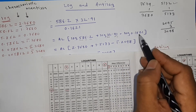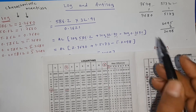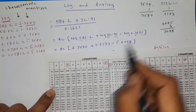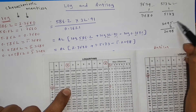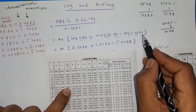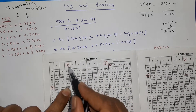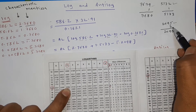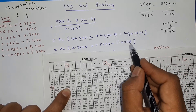For log of 0.1621, we see the log in the same manner. The first two digits are 16, the third digit is 2, giving 2095. The fourth digit is 1, so in the mean difference column for 1 we get 3. So 2095 + 3 = 2098. Before the decimal in 0.1621 there is one digit (the 0 counts as one), so characteristic is 1 − 1 = 0... actually it is bar 1. So log 0.1621 = bar 1.2098.